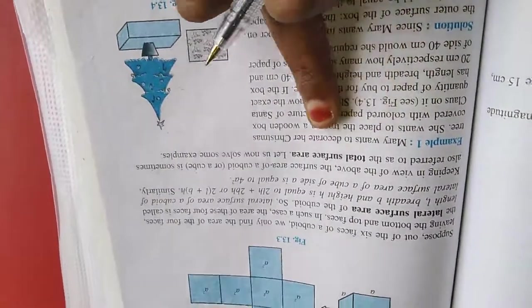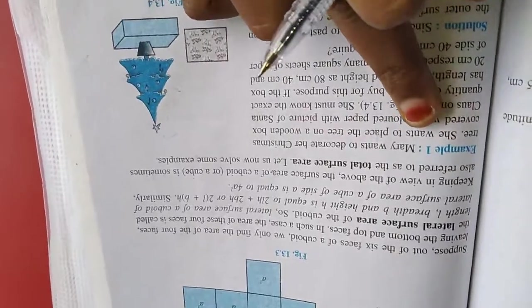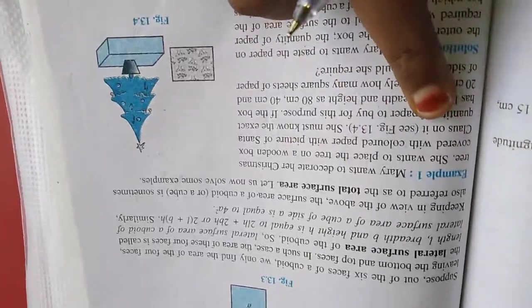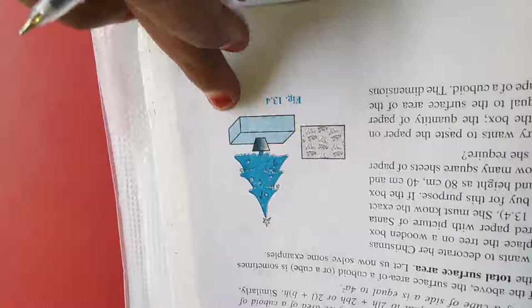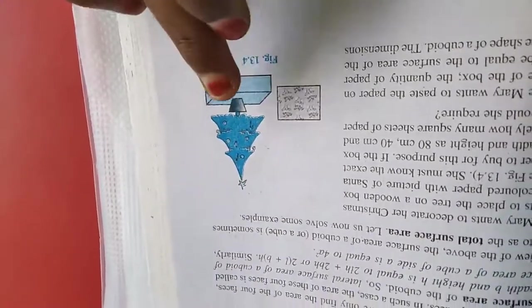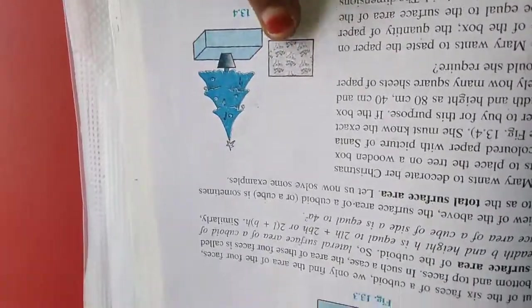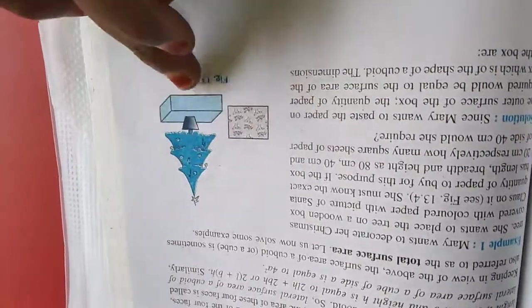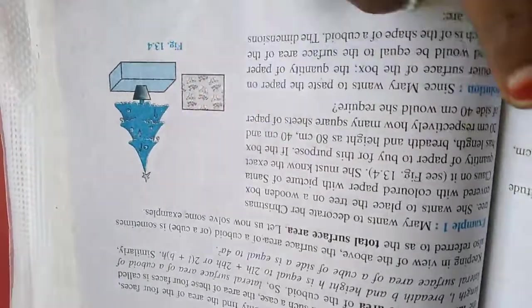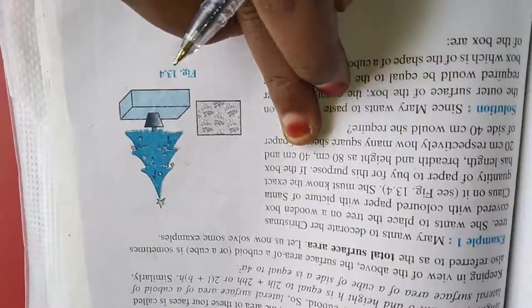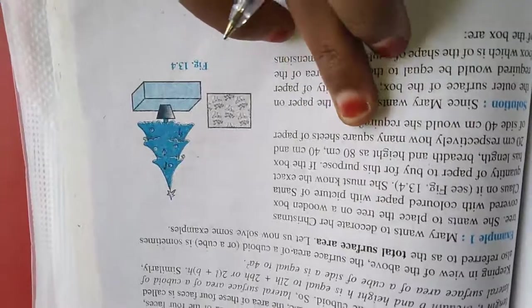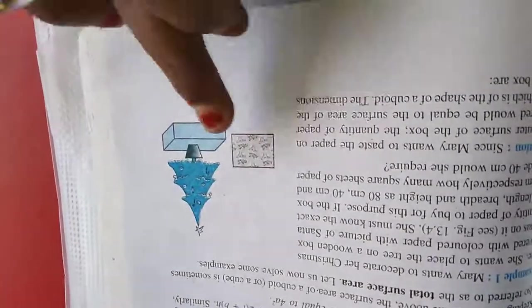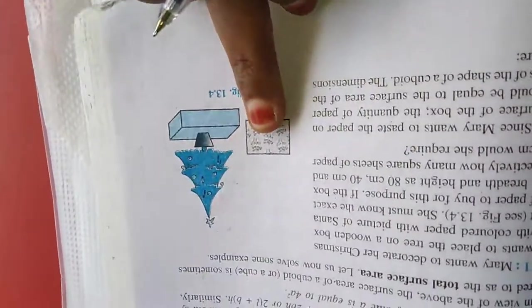This is example 1. Mary wants to decorate her Christmas tree. She wants to place the tree on a wooden box covered with colored paper with a picture of Santa Claus on it. The shape of this wooden box is cuboid. She wants to paste this wooden box fully with Santa Claus stickers.